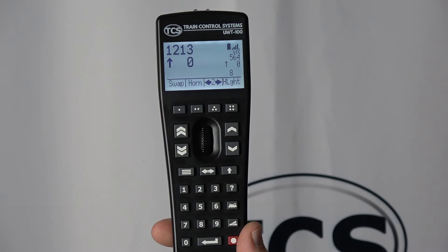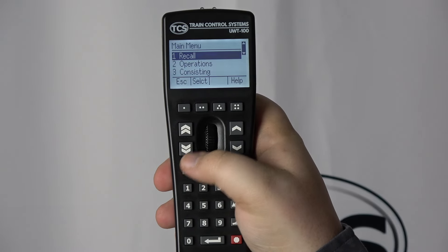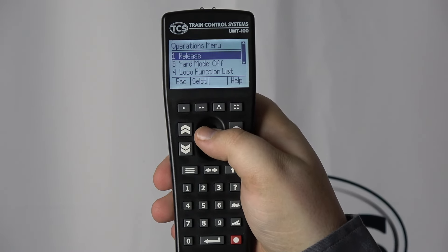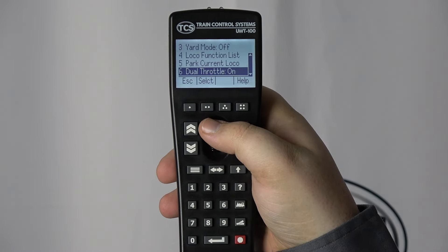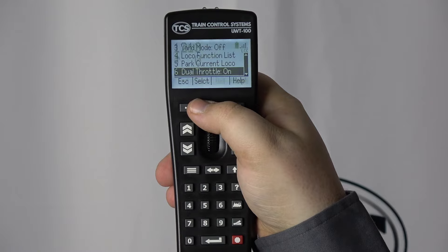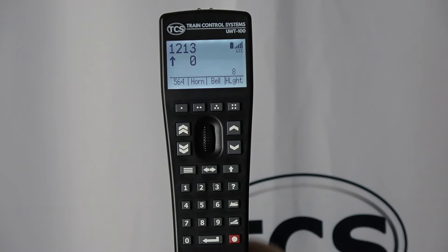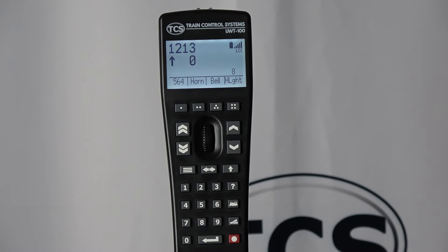To turn off dual throttle mode, press the menu button, select operations, scroll to dual throttle and select it or press button 6. Dual throttle mode is now turned off.